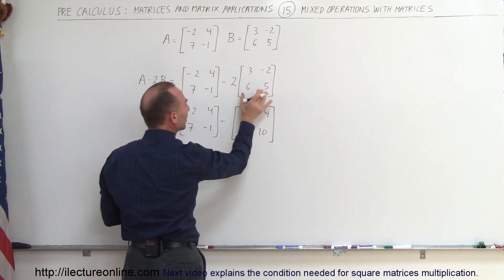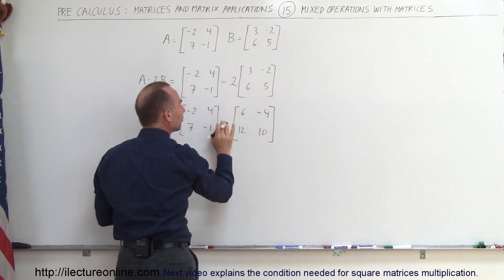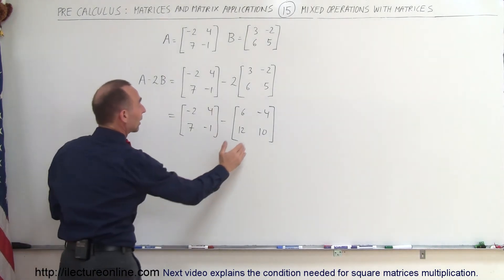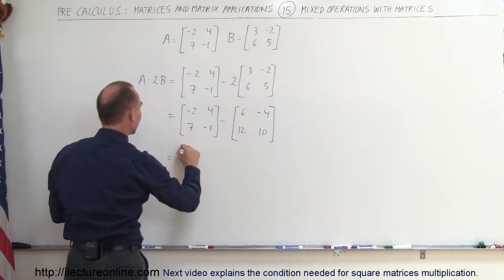Notice I only multiply the matrix with the 2 and not with the negative so the negative is still there. Now the next thing we're going to do is simply subtract this matrix from this matrix.